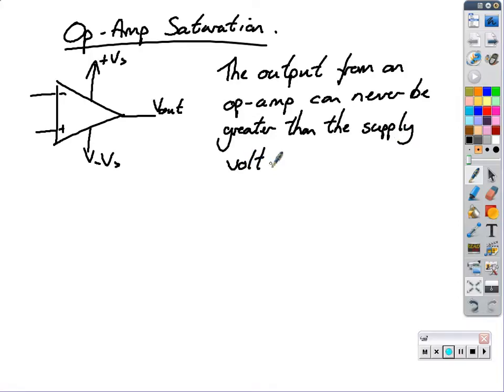And the supply voltage to the center of the op-amp there, this supply voltage Vs, so plus or minus Vs. So Vout can never be greater than the plus or the minus Vs.